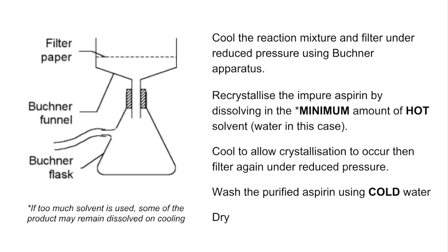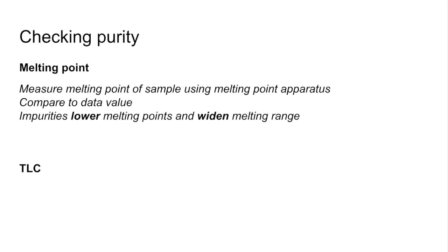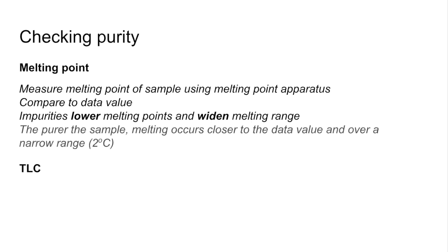The next thing we need to do is check the purity of the dry, purified aspirin. There are two ways to do it: you could either use melting point or TLC — thin layer chromatography. For melting point, you'd basically measure the melting point of your sample and compare that to a data value. Impurities lower melting points and they widen melting ranges. So the purer your sample is, the melting is going to occur closer to that data value — remember it's always going to be lower than it, unless it's bang on pure — and it's going to melt over a narrower range. A melting range of around 2 degrees C will be classed as fairly pure.